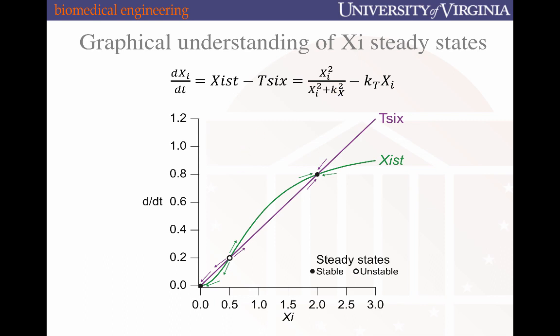If we look at the lowest steady state, recall that's the X-bar sub i equal to 0. If we nudge that steady state towards the realizable values to the right-hand side, what we can see is that Tsix production in purple is greater than the Xist production in green, collectively pulling that Xi state back towards the X-bar sub i equal to 0 state, reinforcing the stability of that stable state. We see the same type of phenomenon to the right of the highest steady state, with Tsix exceeding Xist and pulling back towards the highest stable state. Where on the left-hand side, by contrast, Xist exceeds Tsix, which provides a reciprocal restoring force that pulls the system back to that highest steady state.